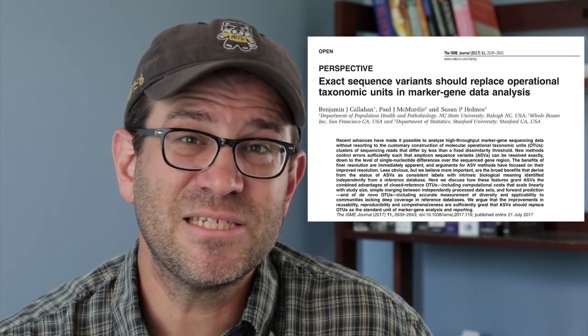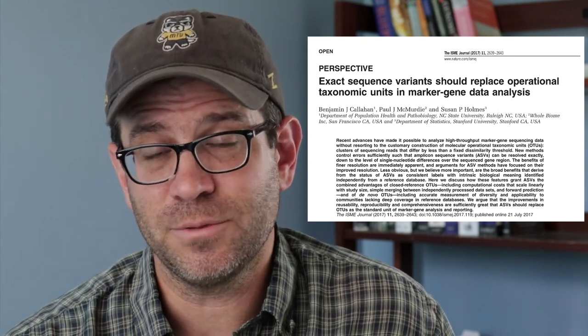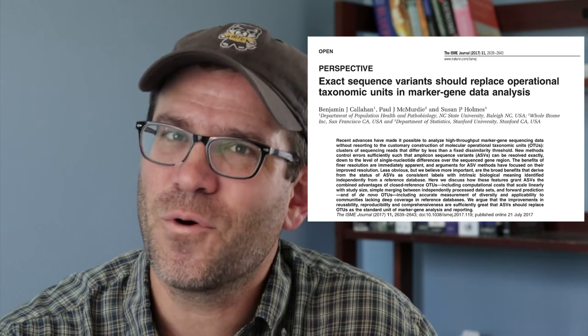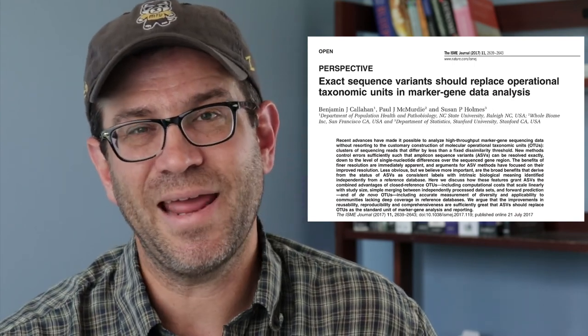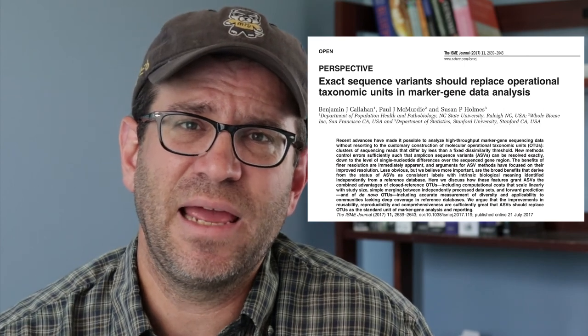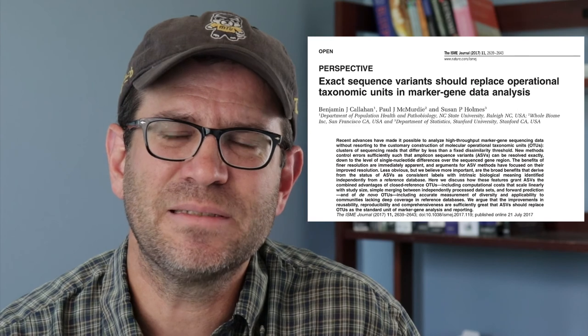There has been a lot of bluster and very strident positions put forth that ASVs should replace OTUs as the biomarker of choice. Keep in mind that phylotypes, OTUs, and ASVs are all a form of OTU — our language is a little sloppy. An ASV is really an OTU with a much more constrained level of variation. I've written reviews of manuscripts posted to bioarchive, made them public, and I worry about the strident adoption of ASVs and getting rid of OTUs altogether. In my group, we use all different levels.